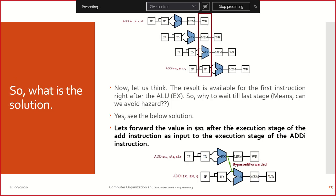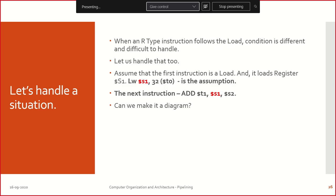The solution is forwarding or bypassing. The result of the first instruction is available right after the ALU (execute) stage. The moment the ALU produces the result, I forward it to the next instruction. One input is the S1 value from the previous instruction's ALU output, and the other input is 5. With additional hardware, this forwarding can be done. Please remember — this cannot be done without some hardware modification and additional investment, but it is possible.